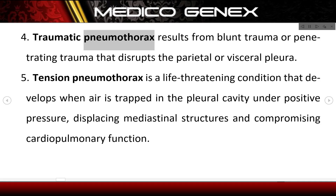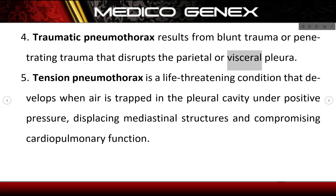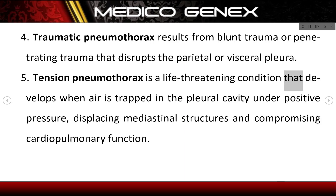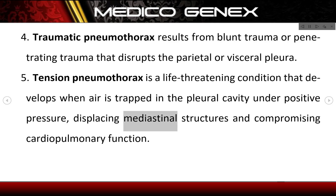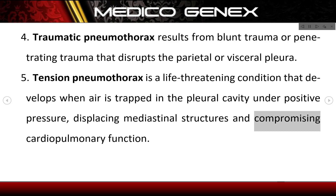Traumatic pneumothorax results from blunt trauma or penetrating trauma that disrupts the parietal or visceral pleura. Tension pneumothorax is a life-threatening condition that develops when air is trapped in the pleural cavity under positive pressure, displacing mediastinal structures and compromising cardiopulmonary function.